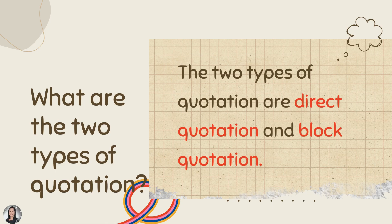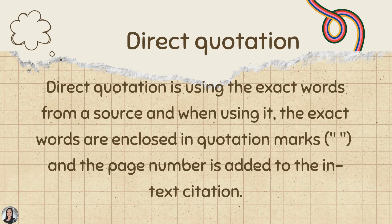Now, there are two types of quotation: direct quotation and block quotation, and this is what we will discuss right now. Let us first discuss direct quotation. When we say direct quotation, it is using the exact words from a source. When using it, the exact words are enclosed in quotation marks and the page number is added to the in-text citation.